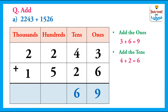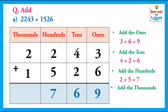After this, we will add the hundreds. 2 plus 5 equals 7. We will write 7 in the hundreds column. And in the end, we will add the thousands. 2 plus 1 equals 3. We will write 3 in the thousands column. So, the answer is 3769.